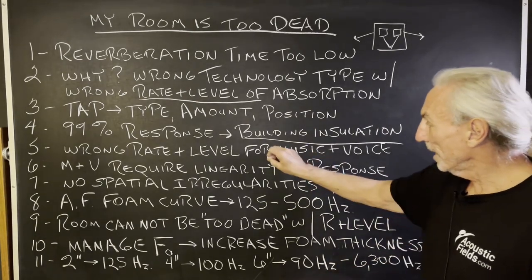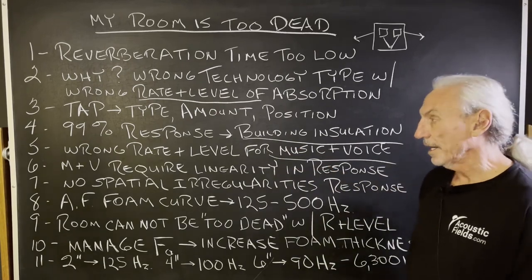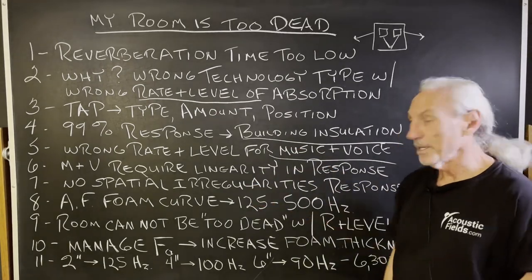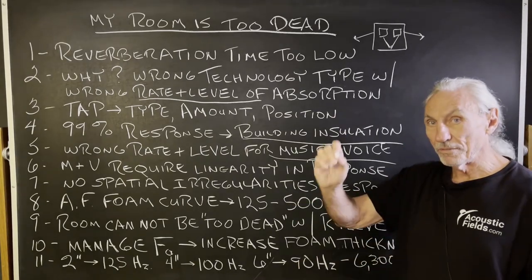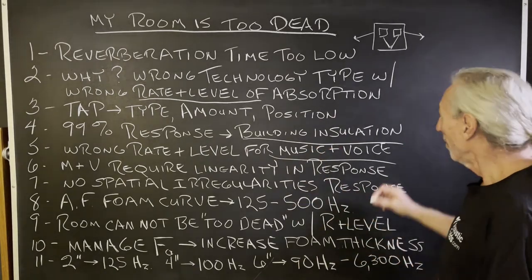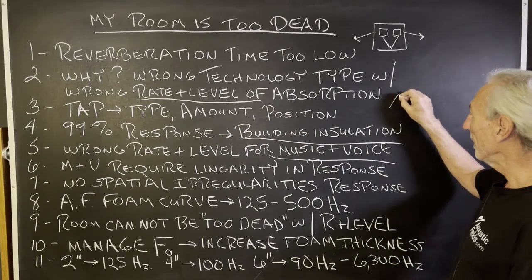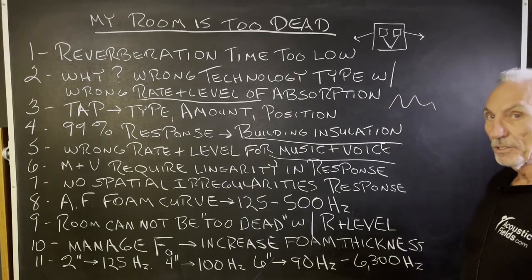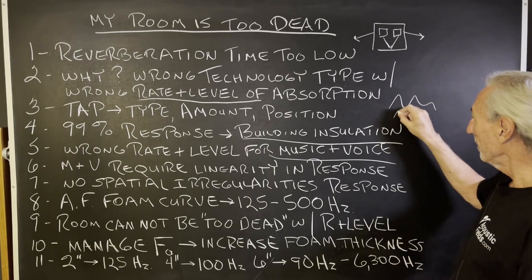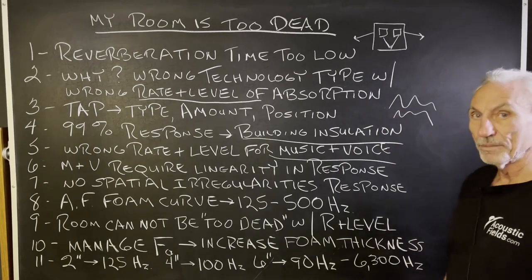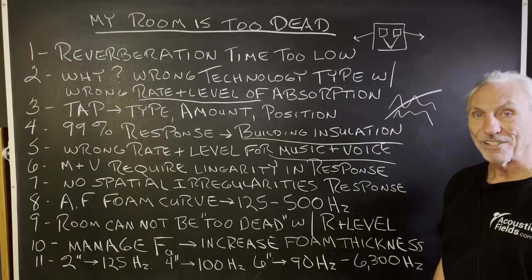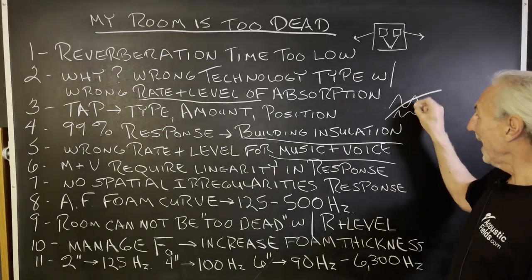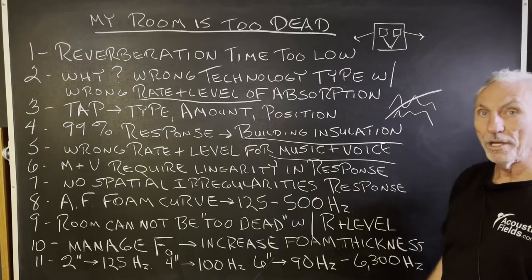So music and voice fall into that category. You need a linearity in response. You have to. There can't be any peaks or valleys in the response curve. Why would you treat a situation in a room with a response curve like that with treatment that has peaks and dips? No, you wouldn't. You'd treat it with a treatment that's linear. You wouldn't want to add to the problem. And this is what goes on here.